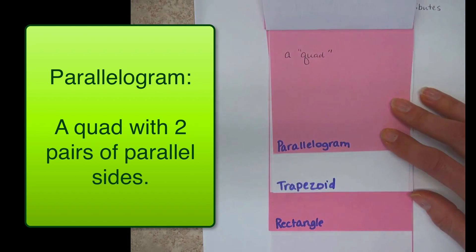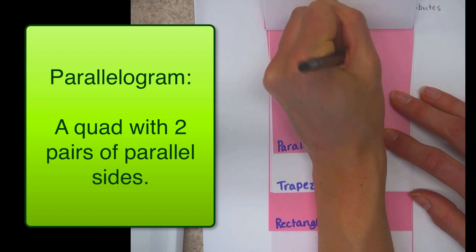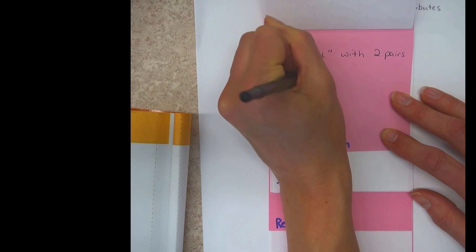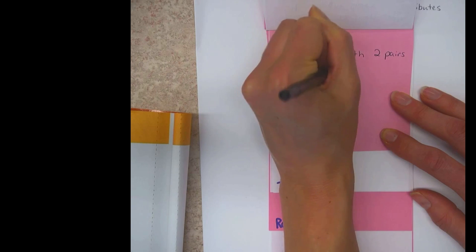There we go. A quad with two pairs of parallel sides. And just to review while Mrs. Van Damme is writing this, parallel means lines that will continue on forever without touching.